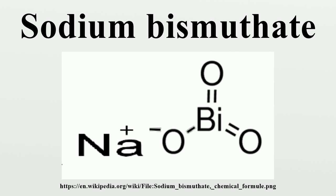Sodium bismuthate adopts an ilmenite structure consisting of octahedral Bi⁵⁺ centers and Na⁺ centers. The average Bi–O distance is 2.116 Å. The ilmenite structure is related to the corundum structure, with a layer structure formed by close-packed oxygen atoms, with the two different cations Na⁺ and Bi⁵⁺ alternating in octahedral sites.